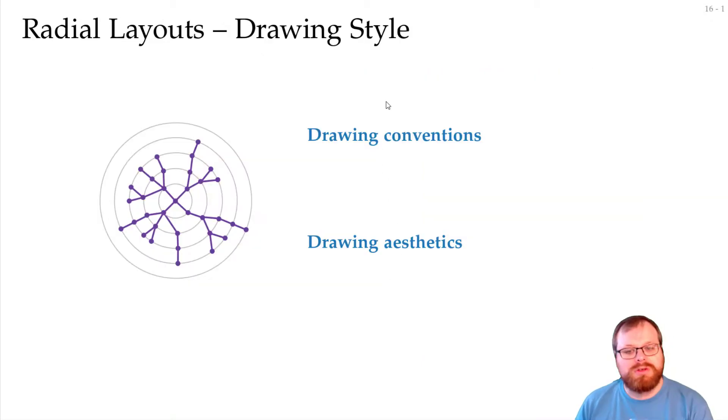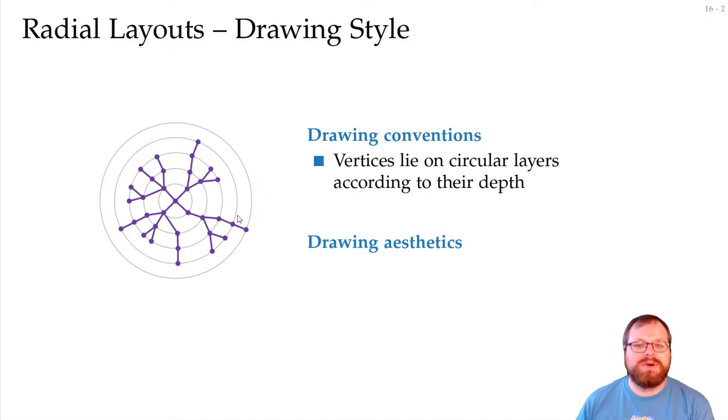So what are the drawing conventions and aesthetics we want to do? For the conventions, we want the vertices to lie in circular layers according to the depth. That's similar to the layered style, but there the layers were horizontal, here they are circles from inside outside. And we want the drawing to be planar.